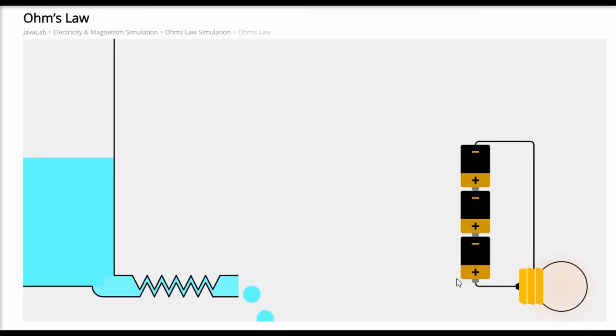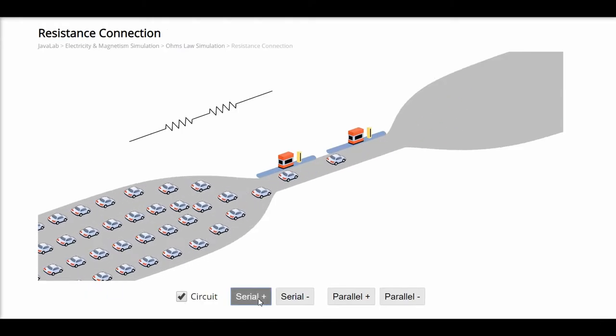Resistors are explained with water analogy, while series and parallel connections with toll gate analogy.